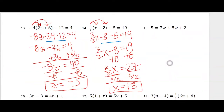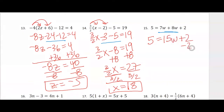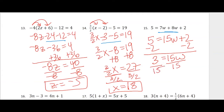We need to combine our like terms for number 15. The 7W plus 8W is going to be 15W, and I'm going to subtract 2 on either side, so that gives me 3 equals 15W. 3 divided by 15 will reduce to 1/5.